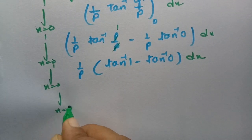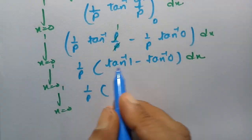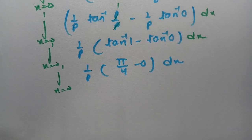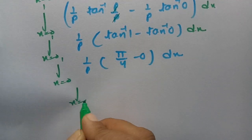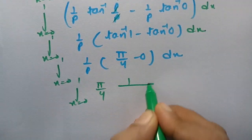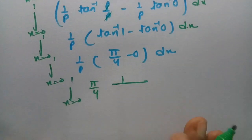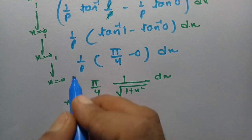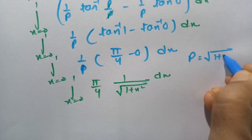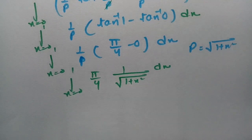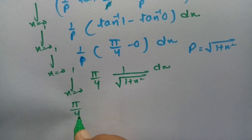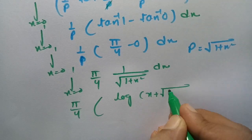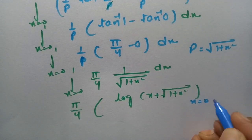With x limits from 0 to 1, tan inverse of 1 is 45 degrees which is pi by 4, and tan inverse of 0 is 0. So the expression is pi by 4 times 1 by p, where p is root over 1 plus x square. Now integrating with respect to x, the integral of 1 by root over 1 plus x square is log of x plus root over 1 plus x square, between the limits 0 to 1.